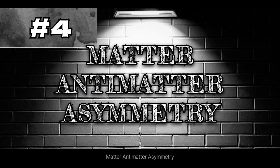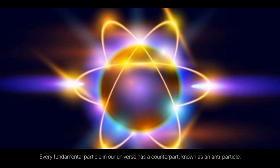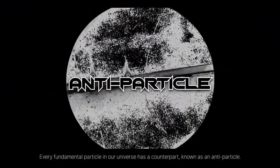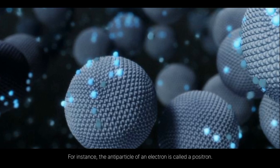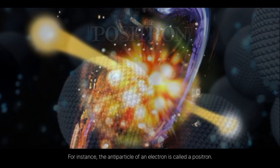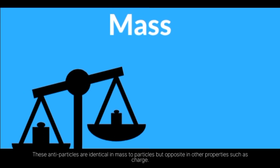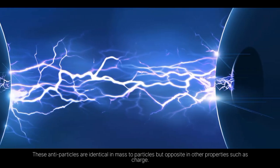Matter-Anti-Matter Asymmetry. Every fundamental particle in our universe has a counterpart known as an antiparticle. For instance, the antiparticle of an electron is called a positron. These antiparticles are identical in mass to particles but opposite in other properties such as charge.